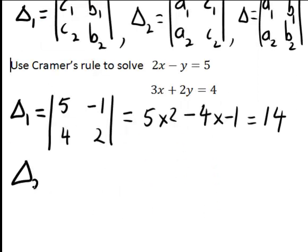Delta2 then, same idea, this time the coefficients of the first unknown, so coefficients of x, 2 and 3, go in the first column, and the constants 5 and 4 go in the second column,